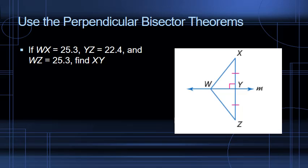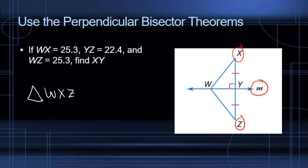Let's look at what we have in the diagram. We've got a triangle WXZ, and line M is a perpendicular bisector. We can note that it is a perpendicular bisector because it bisects segment XZ and it's perpendicular — we see the right angle box there. Because it's a bisector, YZ and YX are congruent, as shown by the congruent hash marks.